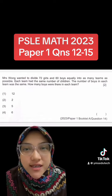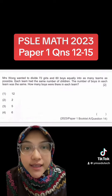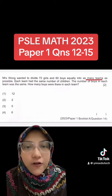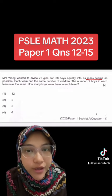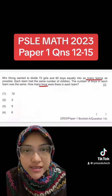Question 14. Mrs Wong wanted to divide 72 girls and 60 boys equally into as many teams as possible. Each team had the same number of children. The number of boys in each team was the same. How many boys were there in each team?